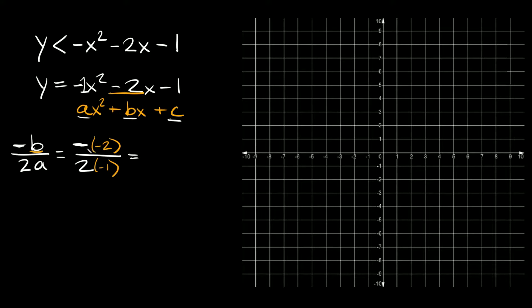If we simplify this: negative times a negative is a positive, so on top we have positive 2, and on the bottom we have negative 2. And 2 divided by negative 2 is equal to negative 1. So this is the x-coordinate of our vertex.